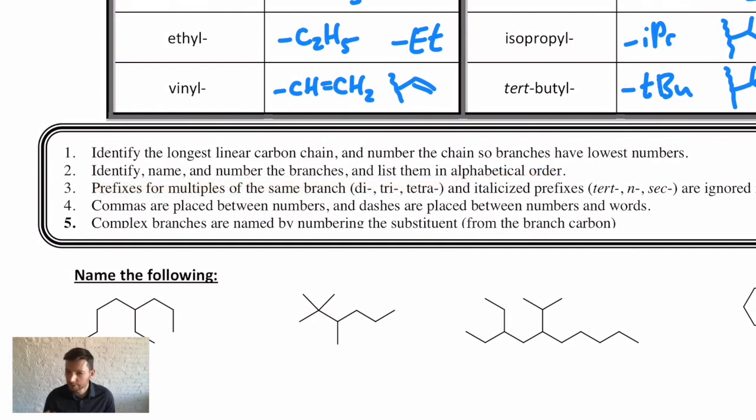You'll see this when we start to do some examples. There are prefixes that are used if you have multiples of the same branch. So if I have a long carbon chain and there's a methyl over here and another methyl over here, we don't say methyl methyl—we say dimethyl, meaning two.